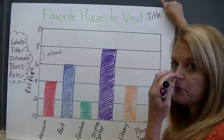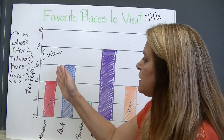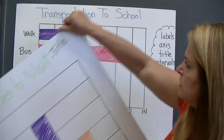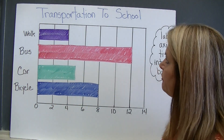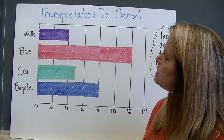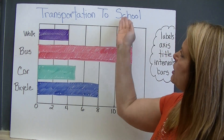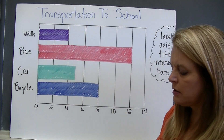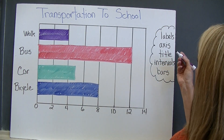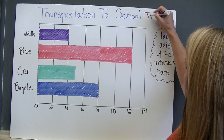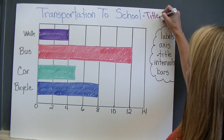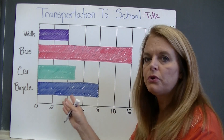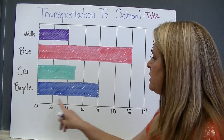Let's look at one more, because remember I told you back at the beginning — the bars can go vertically or horizontally. So here's my horizontal bar graph. The question asked here is: how do you get to school? Your transportation to school — how did you get to school today? So this is my title. And then here's one axis going across. Even though the bars go horizontally this time, these are still my two important axes.